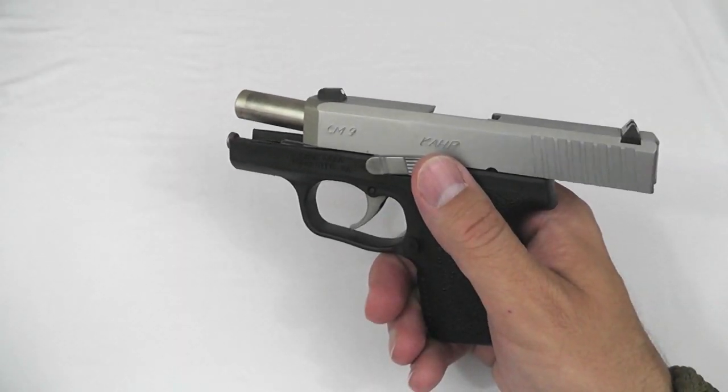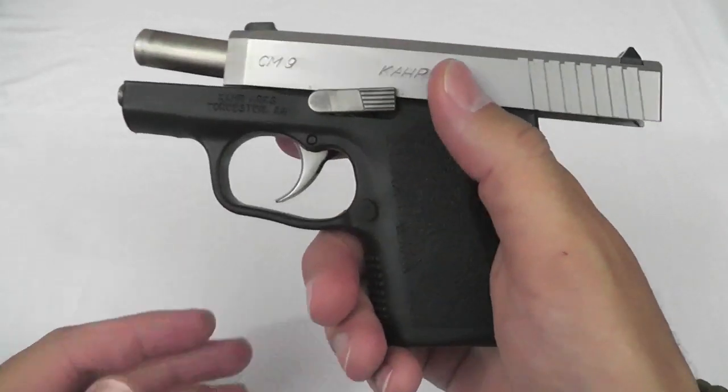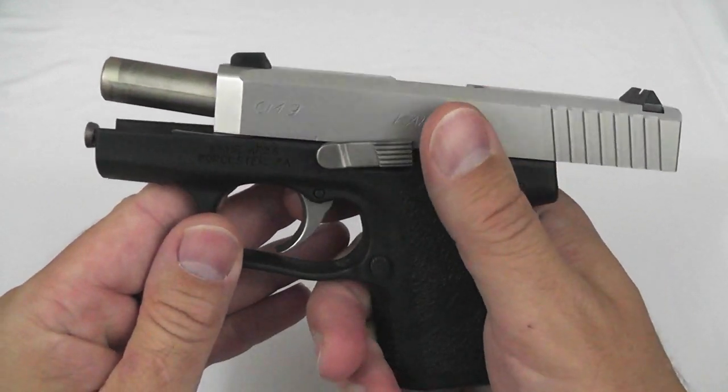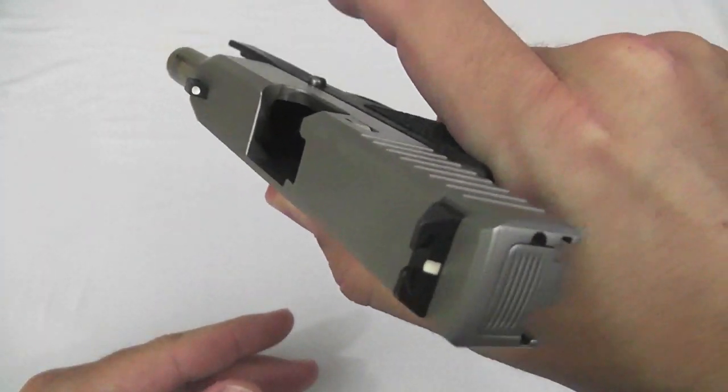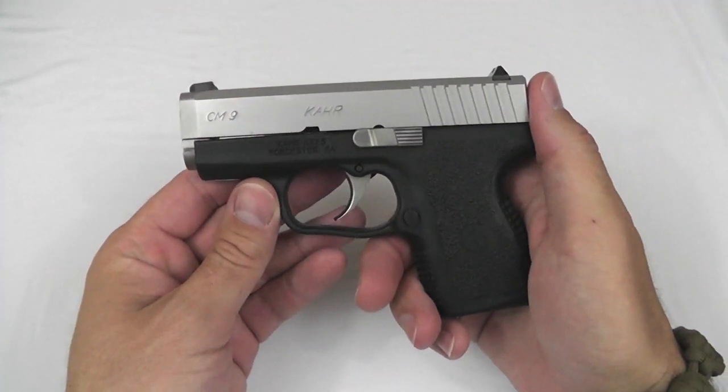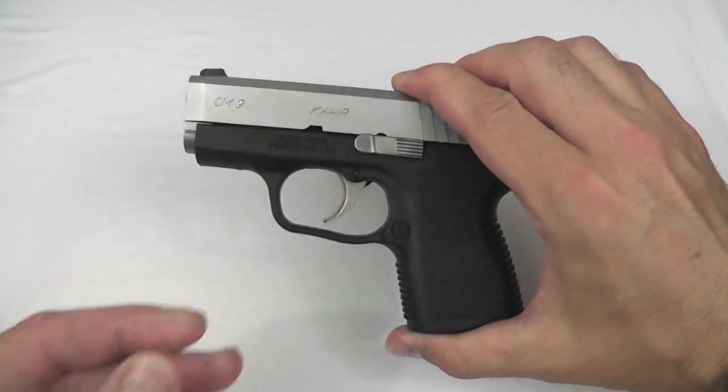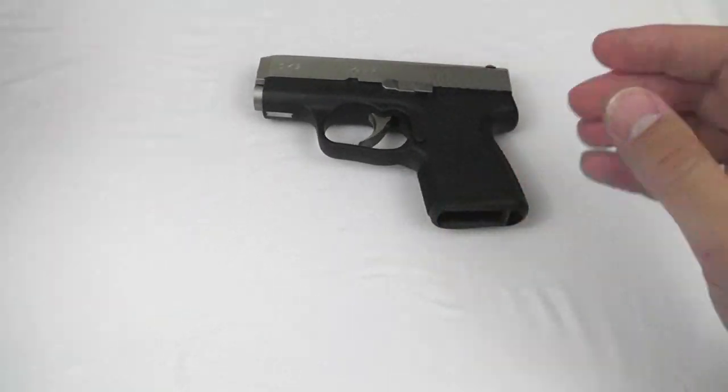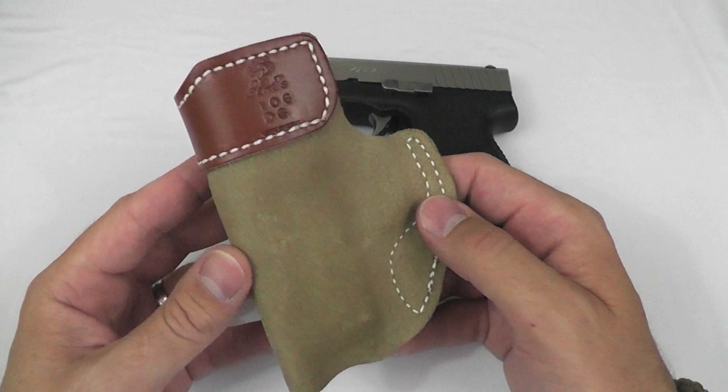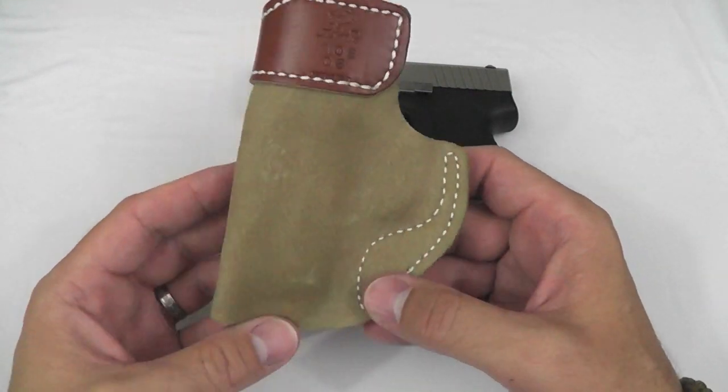I'm a concealed carry permit holder, and I like to carry my small, slim, lightweight Kahr CM9, single stack 9mm with me just about everywhere I go. And in order to do that, I need a good, solid holster. The DeSantis SOF Tuck is just such a holster. Stick around for my review of it.